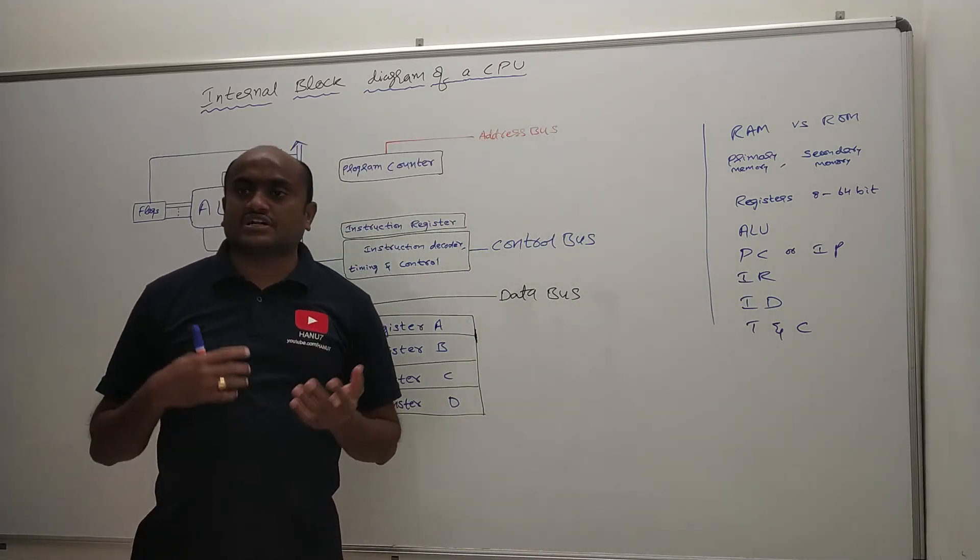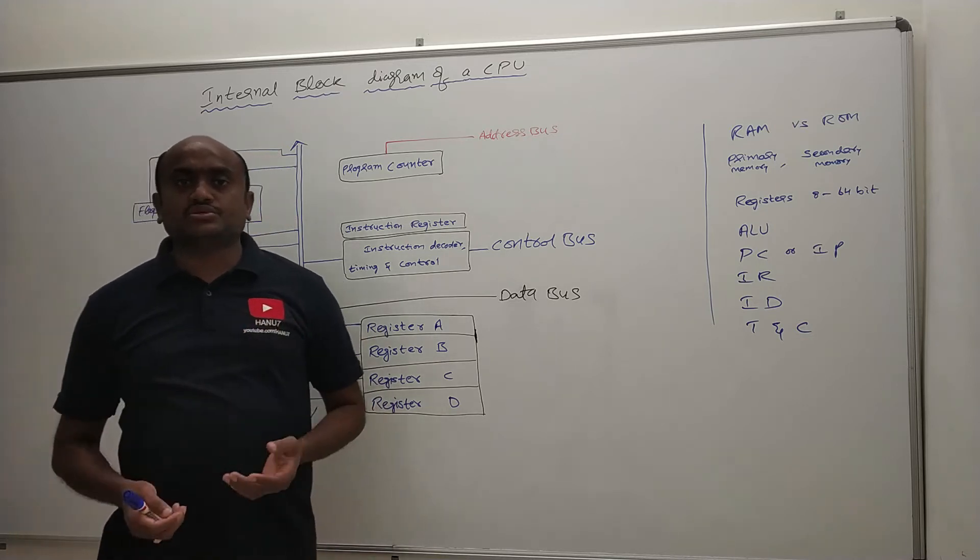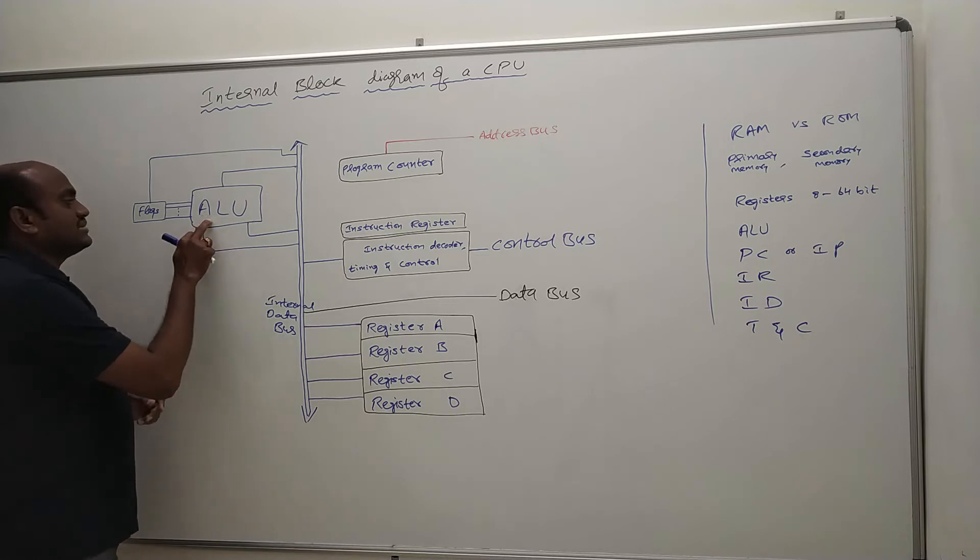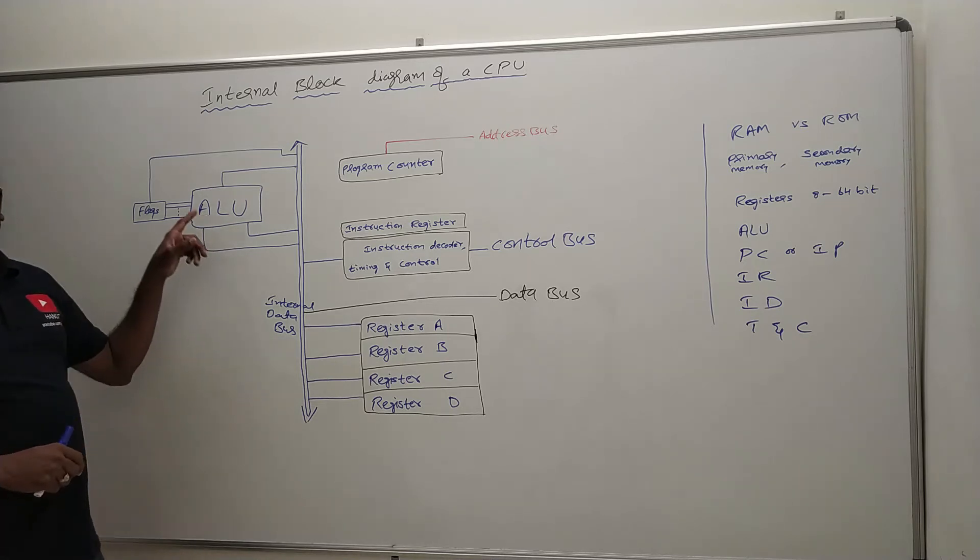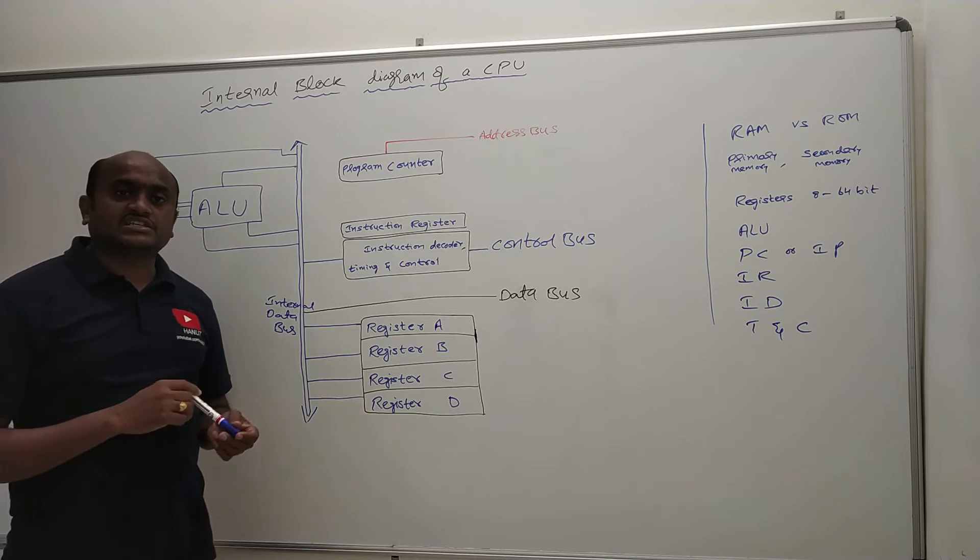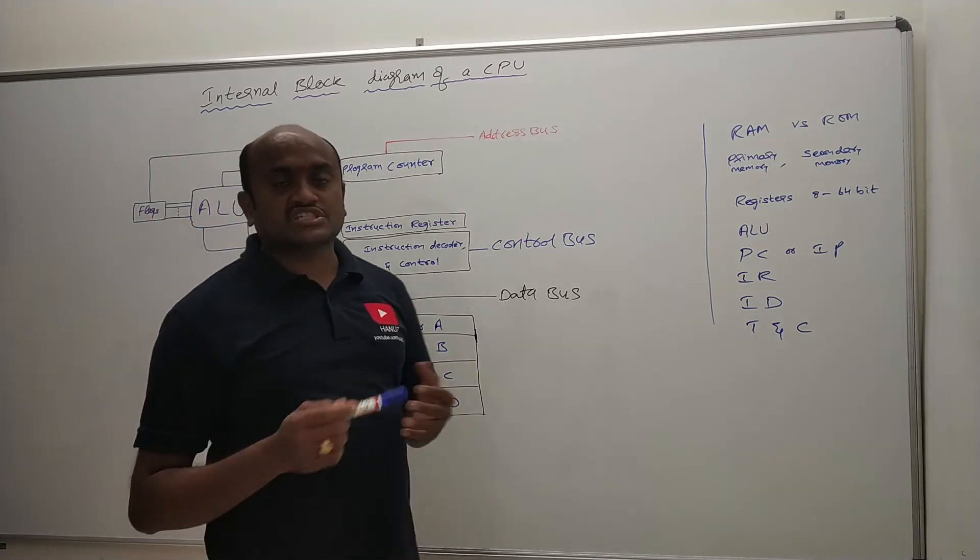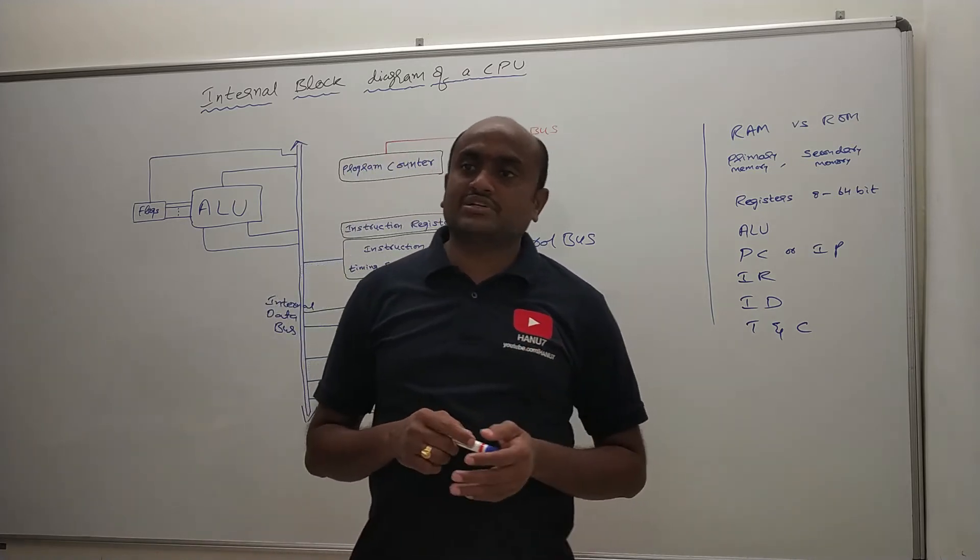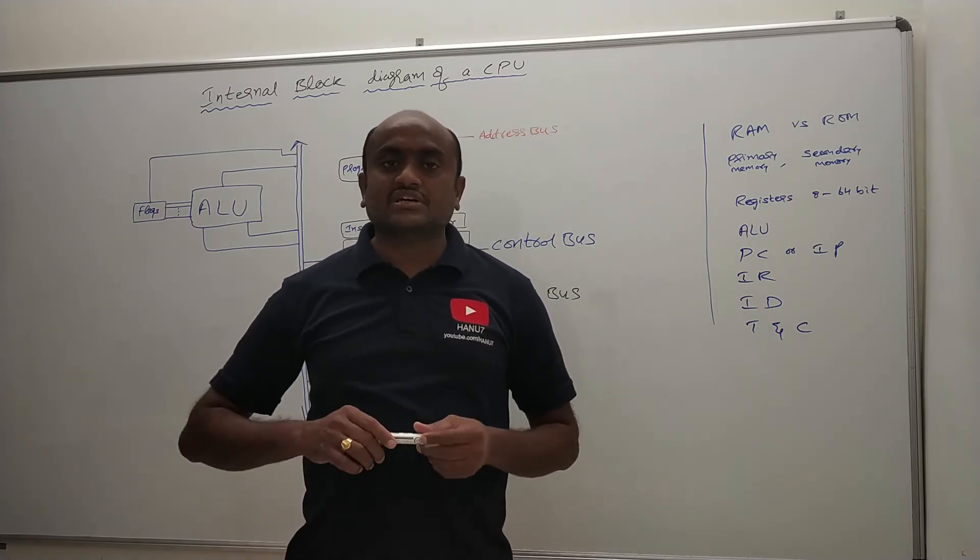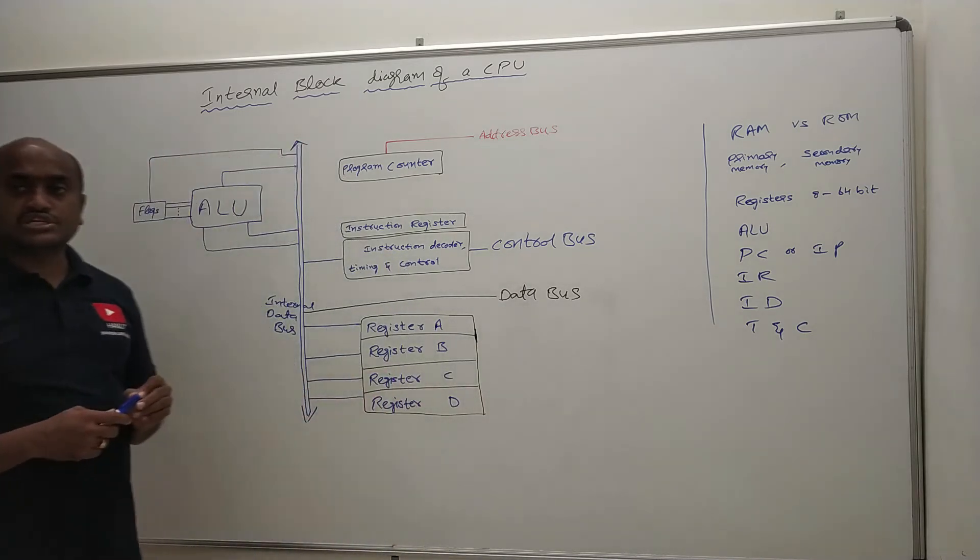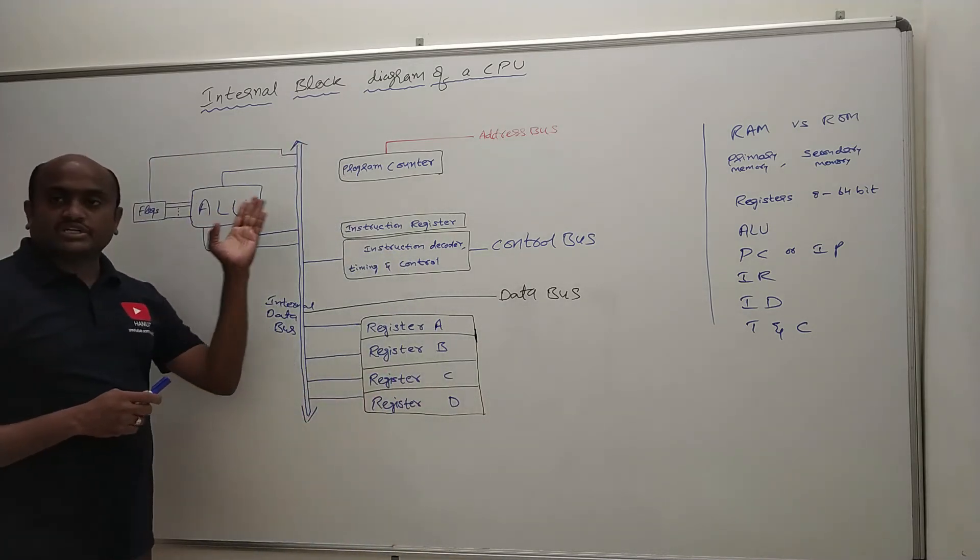So in this internal block diagram of CPU, this ALU plays a key role. So all the processings, all the operations which CPU will perform will be done by or will be handled by this ALU. ALU capacity will decide the size of the processor. Size means like 8 bit, 16 bit, 32 bit. The processing capability of that particular processor will be decided by the ALU.